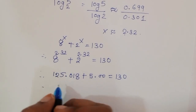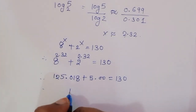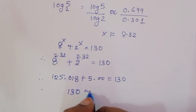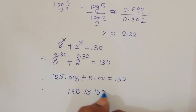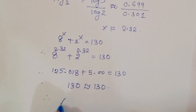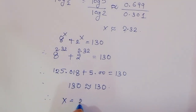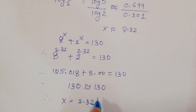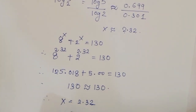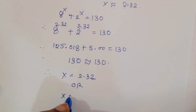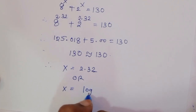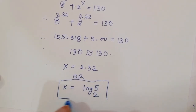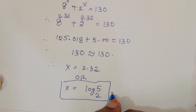8 plus 5 that is approximately equal to 130. Therefore, the value of x is equal to 2.32, that is x is equal to log of 5 to the base 2. This is the solution. Thank you.